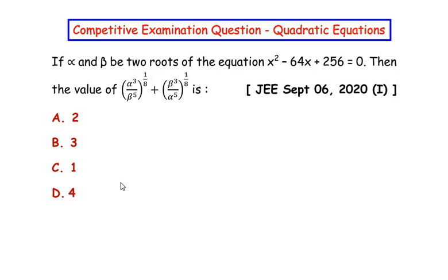Hello and welcome to my channel. In this video we are going to solve an example from the quadratic equations chapter which had appeared in JEE September 2020 Paper 1. The problem states: if alpha and beta are two roots of the equation x² - 64x + 256 = 0, then find the value of the given expression.